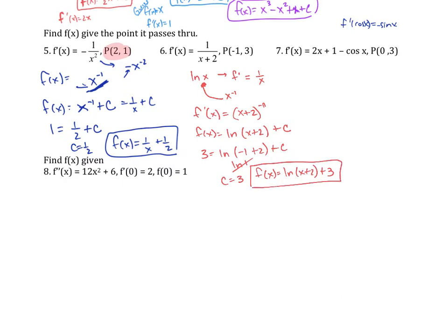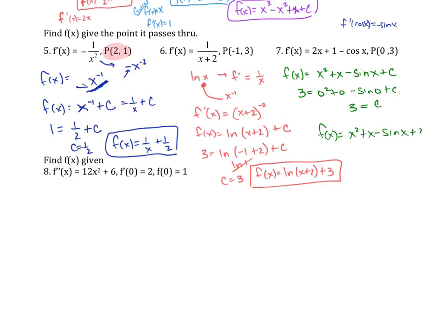For f prime of x equals 2x plus 1 minus cosine x with a given point: f of x will be x squared plus x minus sine x plus C, because the derivative of sine gives cosine. Plugging in the point where x equals 0 and f equals 3: 3 equals 0 plus 0 minus sine of 0 plus C, so C equals 3. Therefore f of x equals x squared plus x minus sine x plus 3.